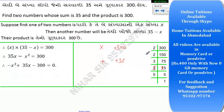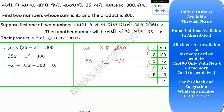We need two numbers whose product is 300 and sum is 35. Let's try: 15 and 20 — 15 times 20 is 300, and 15 plus 20 is 35. Yes, that works! Since both are positive, we write plus 20x plus 15x in place of 35x.